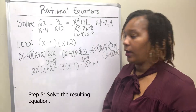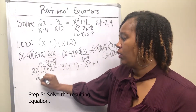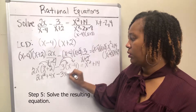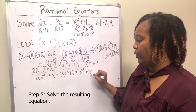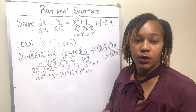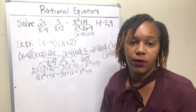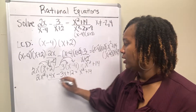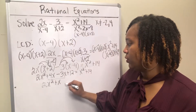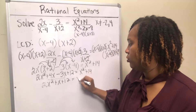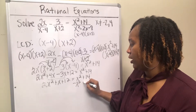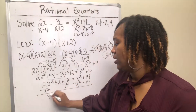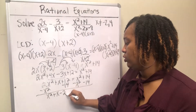Now solve the remaining equation. Distribute 2x to get 2x squared plus 4x. Distribute the minus 3 to get negative 3x plus 12. Drop down the x squared plus 14. You end up with a quadratic equation — you know it's quadratic because the highest exponent is 2. To solve a quadratic, you want to get 0 on one side, so move everything to one side. Combine like terms: 4x minus 3x is x. Then subtract x squared and subtract 14 from both sides, giving you x squared plus x minus 2 equals 0.